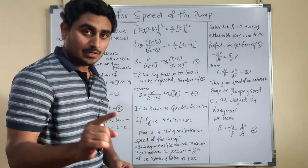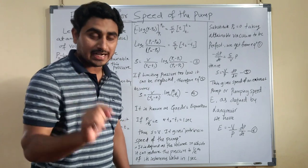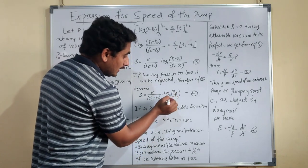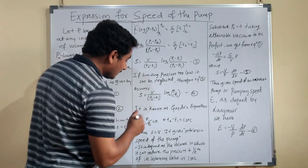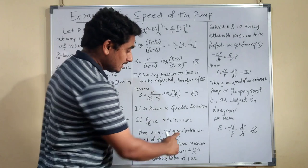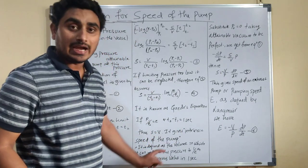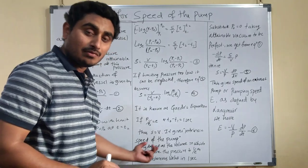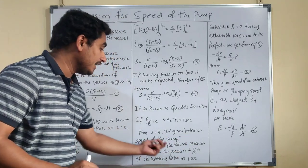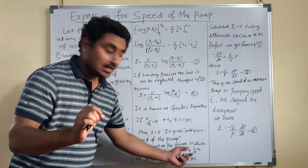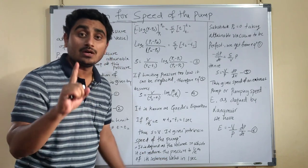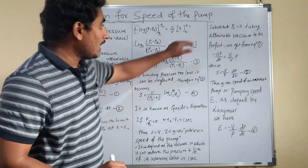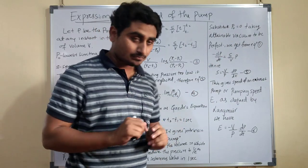If P1/P2 = e and (t2 − t1) = 1 second, substituting into equation 4: log(e) = 1 and (t2 − t1) = 1, so S = V. This gives the intrinsic speed of the pump, defined as the volume in which it can reduce the pressure to 1/e of its instantaneous value in one second.